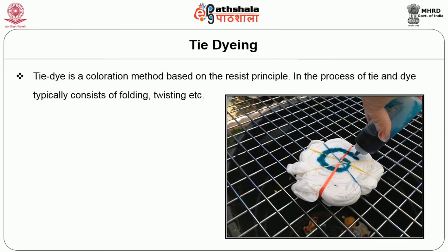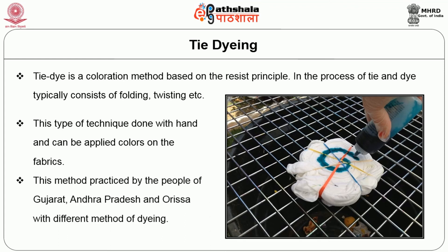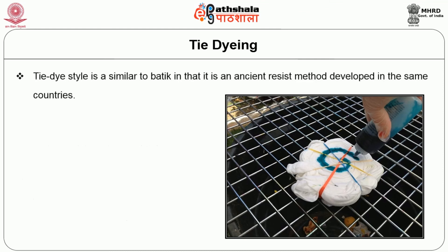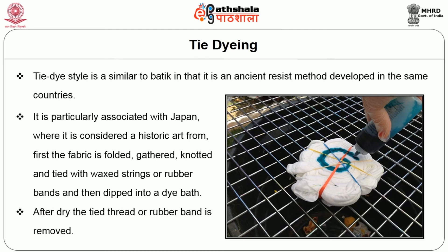The next type of printing is tie and dye. Tie and dye is a coloration method based on the resist type of method. This process typically consists of folding, twisting, and gathering the fabric together. This technique is done by hand and colors can be applied on the fabrics. This method is practiced by the people of Gujarat, Andhra Pradesh, and Orissa with different methods of tying. Tie and dye style is similar to batik in that it is an ancient resist method developed in the same countries. It is particularly associated with Japan, where it is considered a historic art form. The fabric is folded, gathered, knotted, and tied with wax string or rubber band, then dipped into a dye bath; after drying, the tied thread or rubber band is removed.